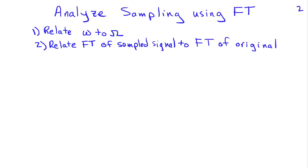The process of analyzing sampling using the Fourier transform is going to involve relating discrete time frequency and continuous time frequency, as well as finding an expression for the Fourier transform of a sampled signal that's a function of the Fourier transform of the original signal.